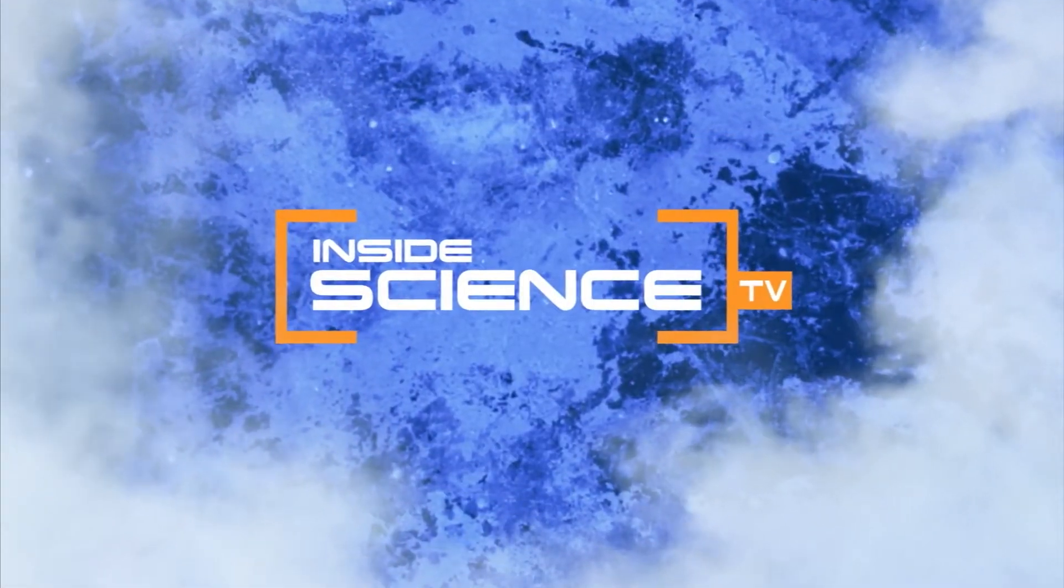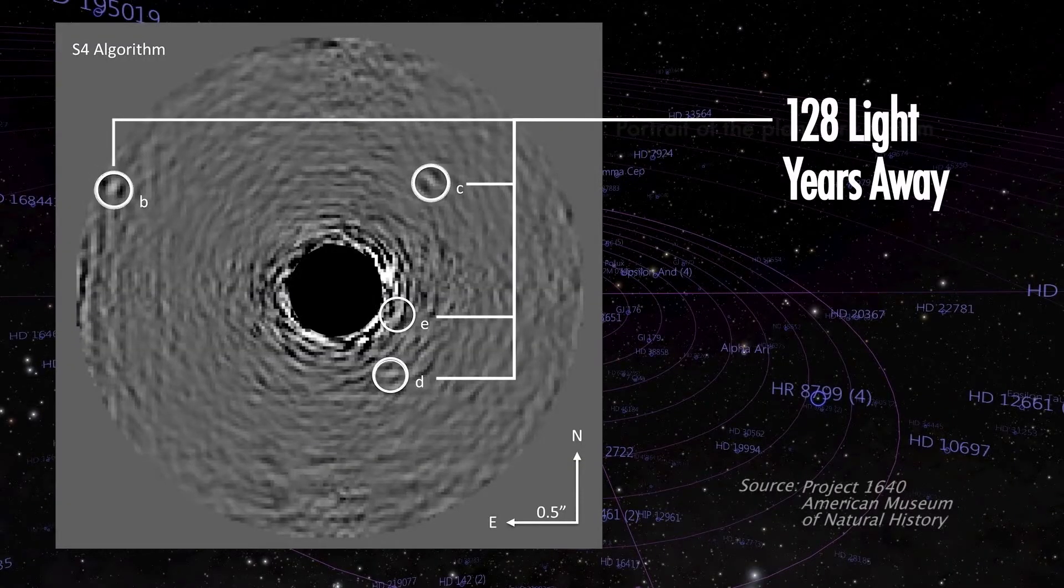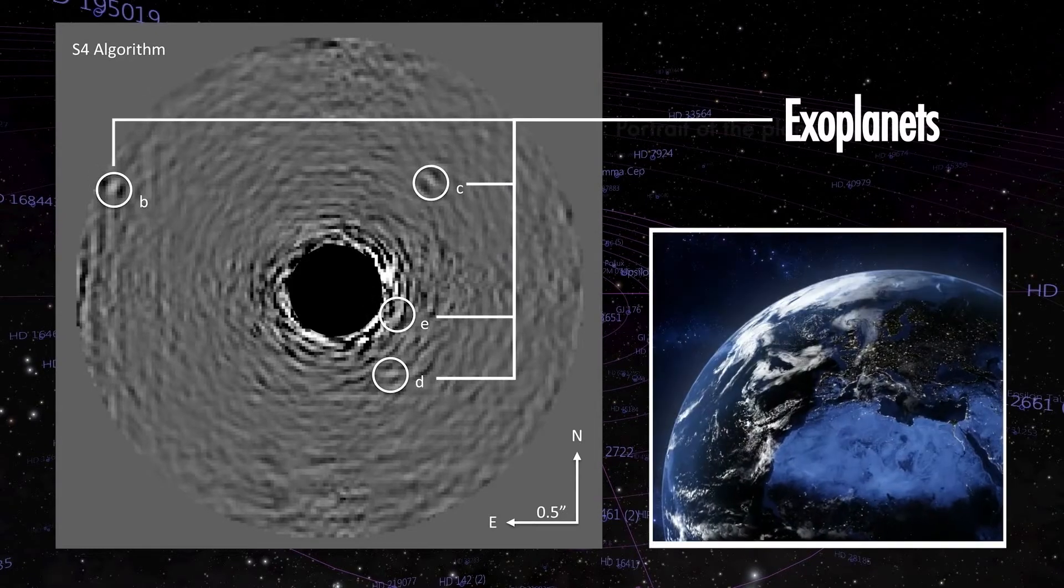Welcome to Inside Science TV. These planets are 128 light years away. They're exoplanets, meaning they orbit around a different sun than our Earth does.